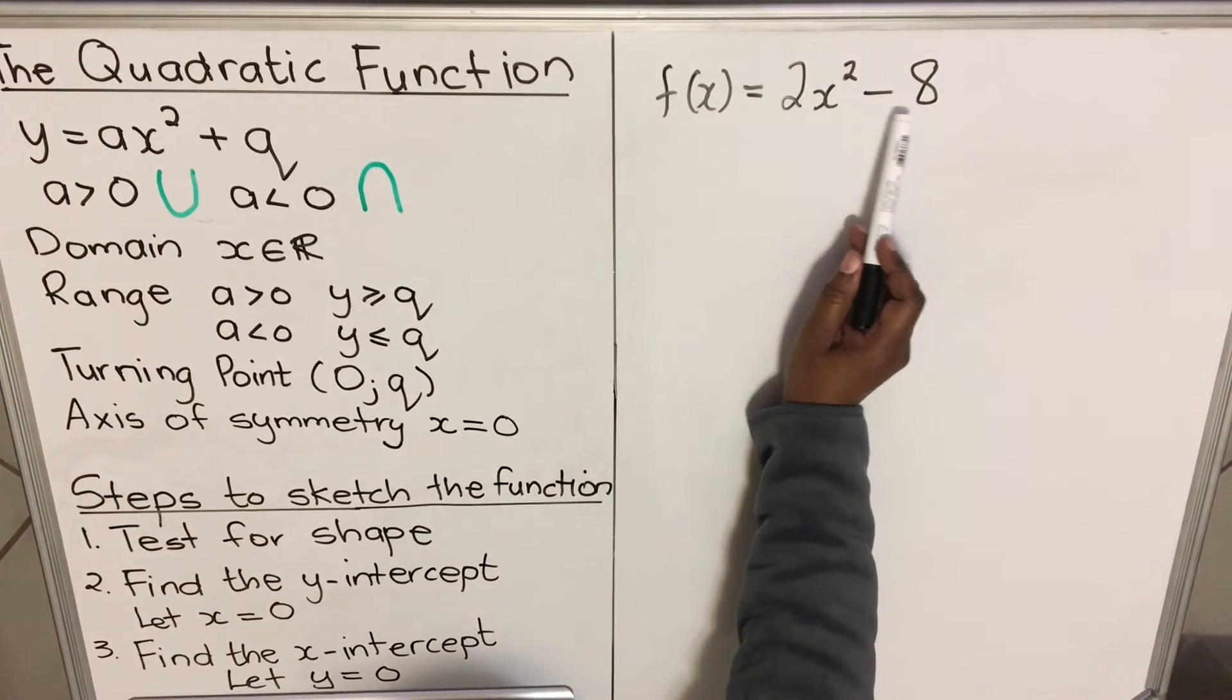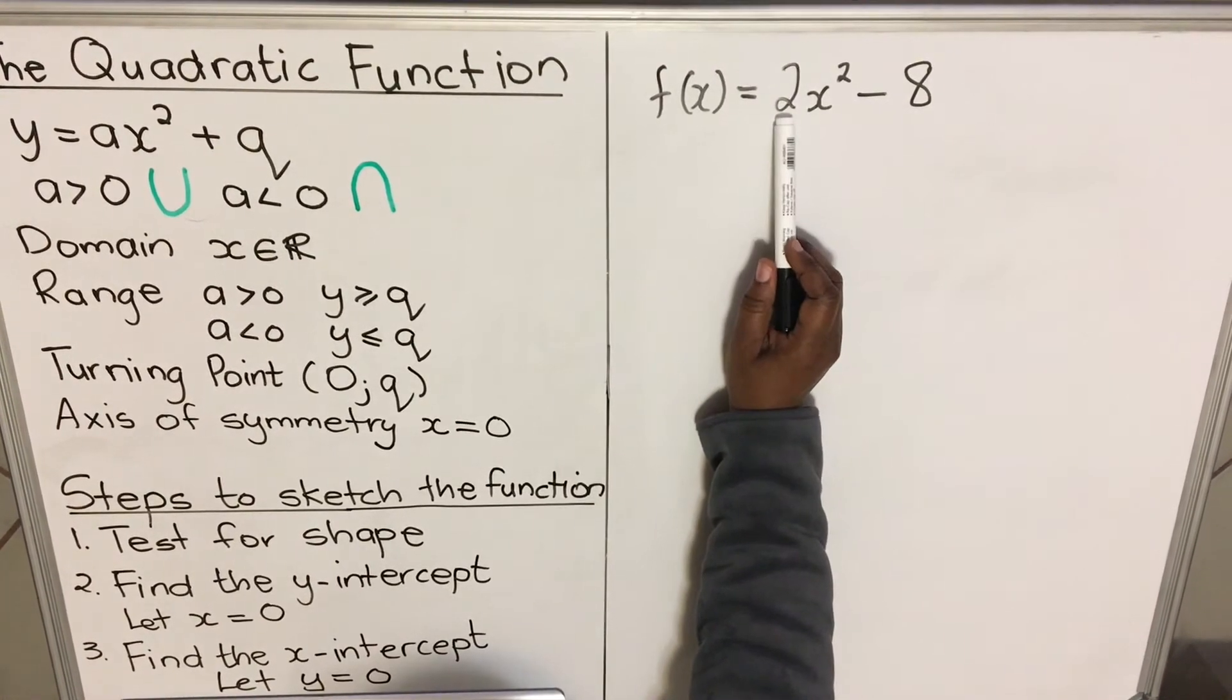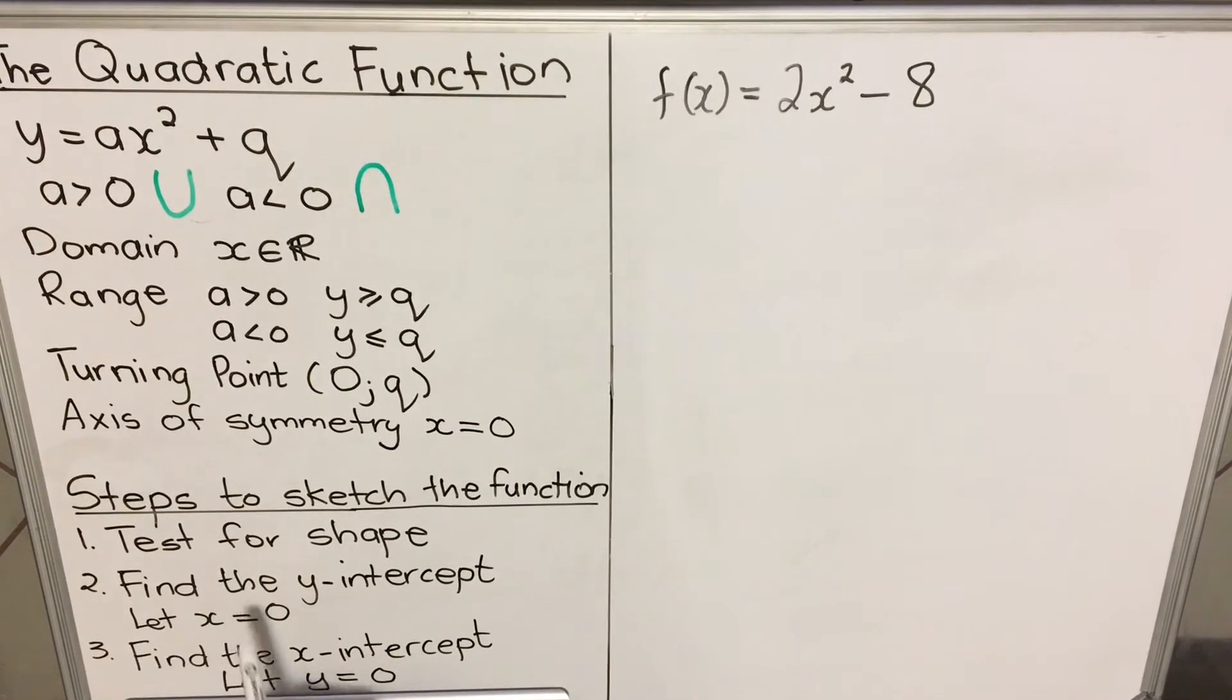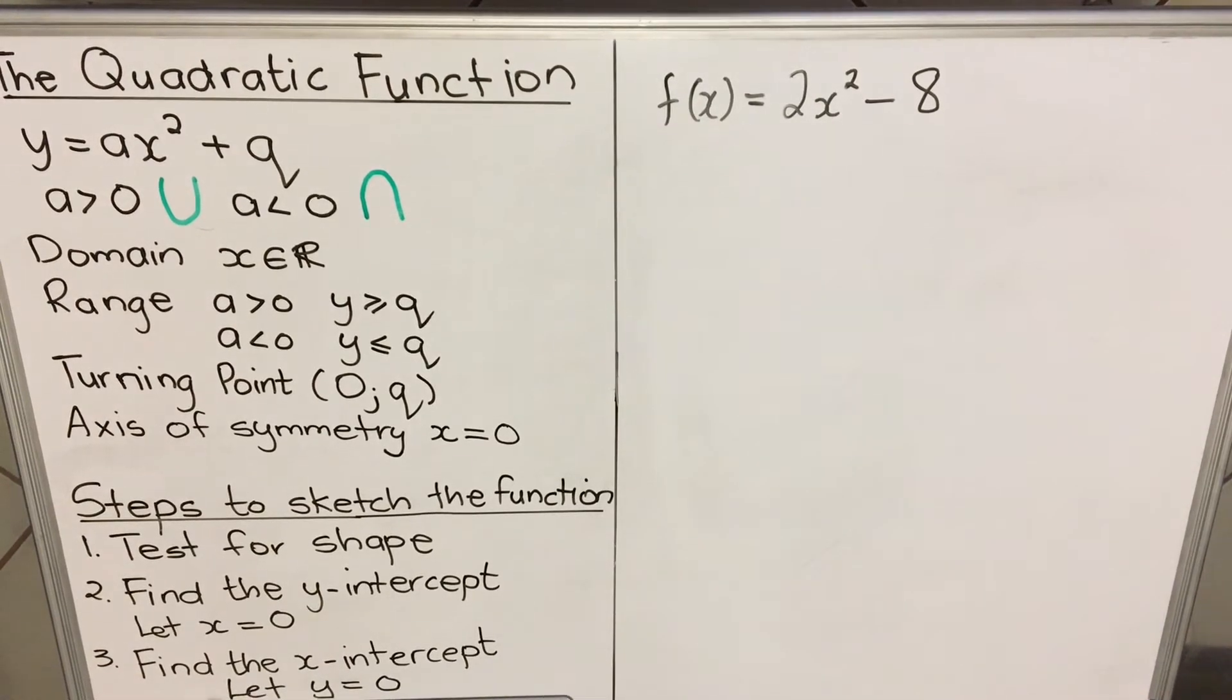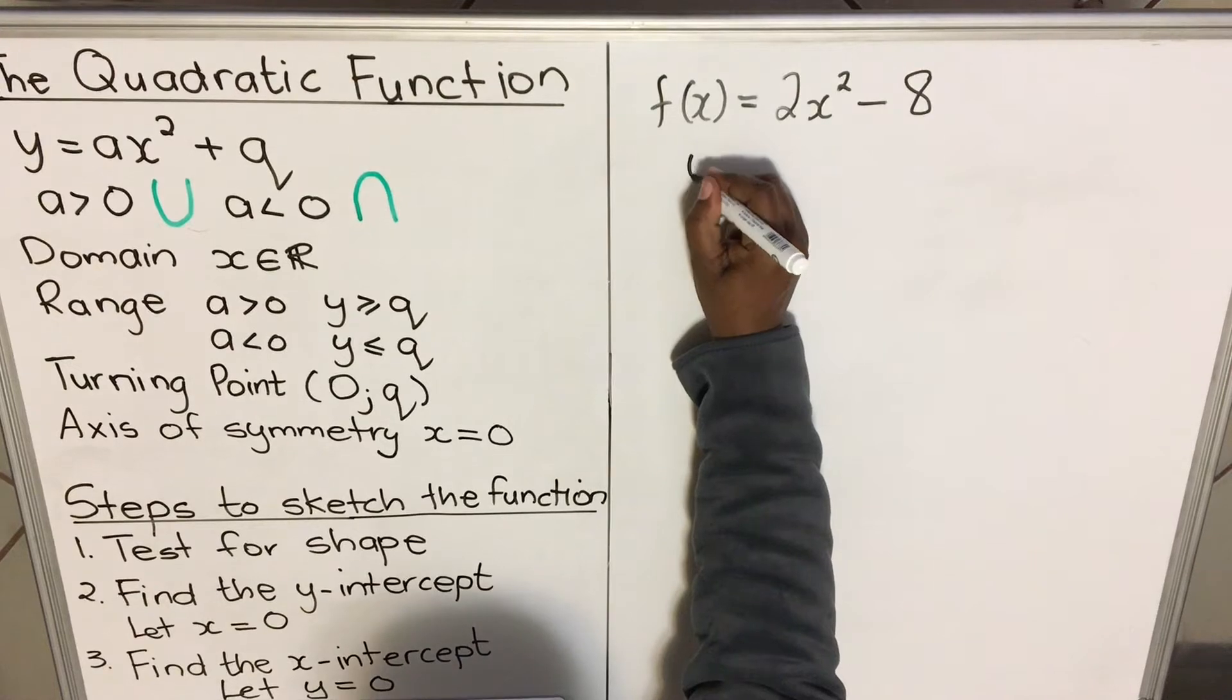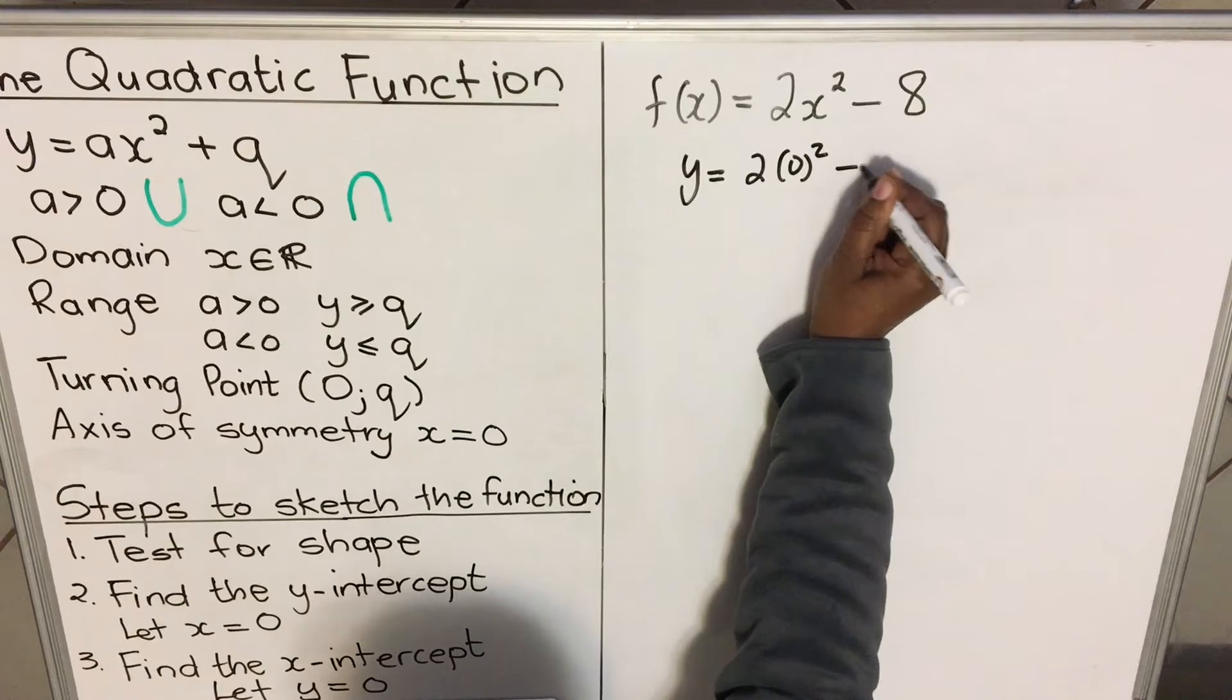Here's the example: f(x)—this is the function of x, is the same as saying y equals 2x squared minus 8. Your a, that number that goes with x squared, here it's positive, so it means my graph will be facing up. The second thing: you find the y-intercept. How do you find the y-intercept? Let x be zero.